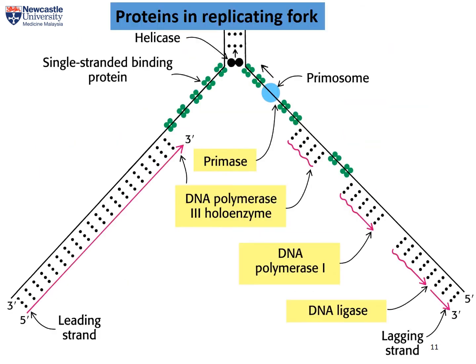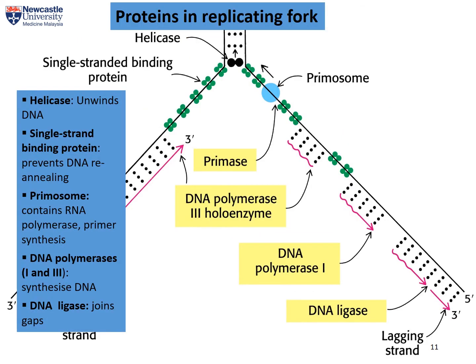In a nutshell, these are the proteins or enzymes required in DNA replication. First, you have helicase that helps to unwind the double helix. Then you have single strand binding proteins that prevent the single strand from rebinding. You have the primosome which contains RNA polymerase required for synthesis of the RNA primer. You also have DNA polymerases I and III involved in DNA synthesis, and last but not least, DNA ligase that joins the Okazaki fragments together.